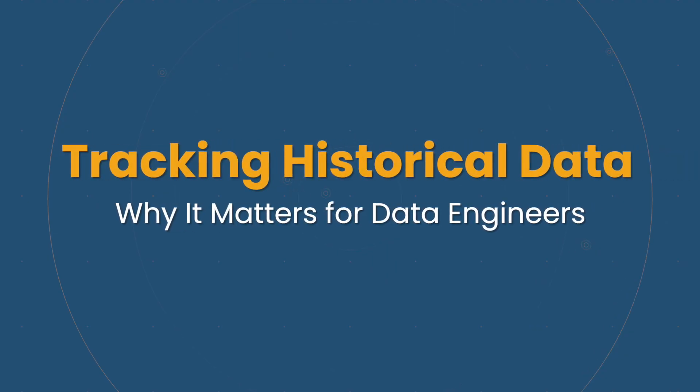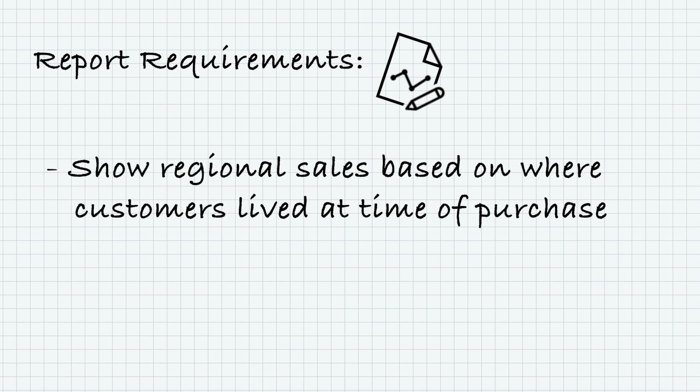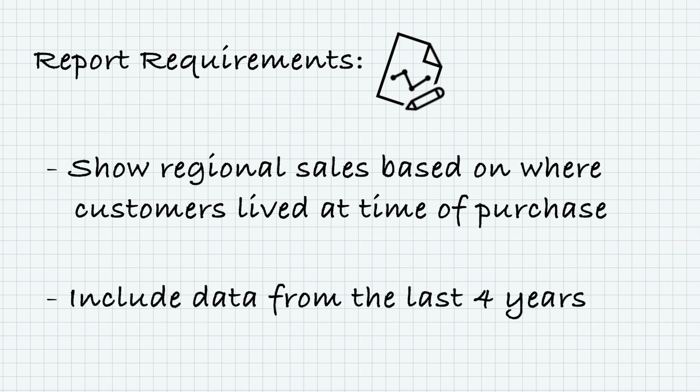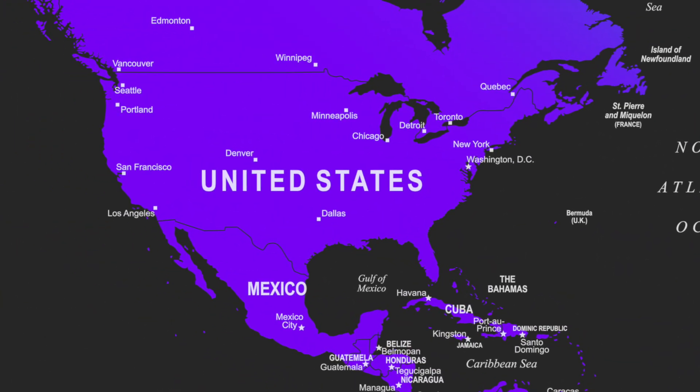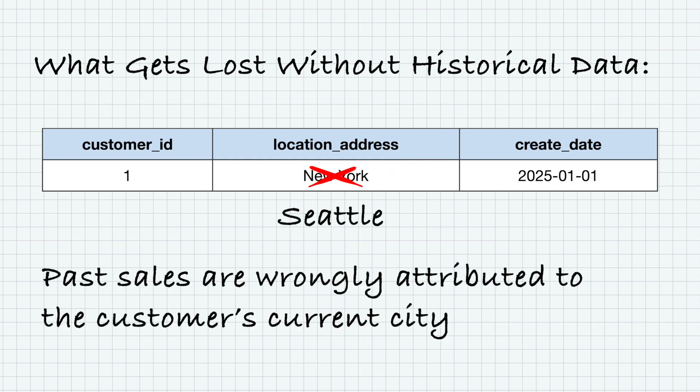Another key thing data engineers like to do is track historical information. If I ask you to create a report with regional sales based on where customers live, broken down over the last four years — that's only possible if you track the history of that information. So if I'm a customer currently in New York and I moved to Seattle, you need to capture that. When did I move? What dates? Otherwise, if you just have the most recent place I lived, the report is going to be skewed — all my sales are going to go to Seattle, even though some of them should be broken out into New York. You want to capture that information, which is why we want to track historical data.